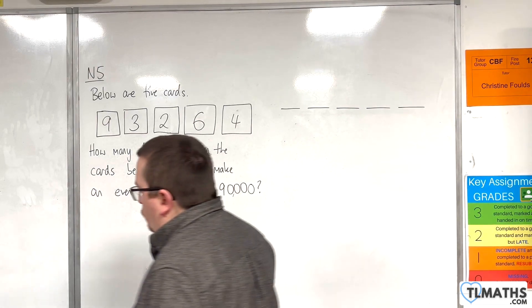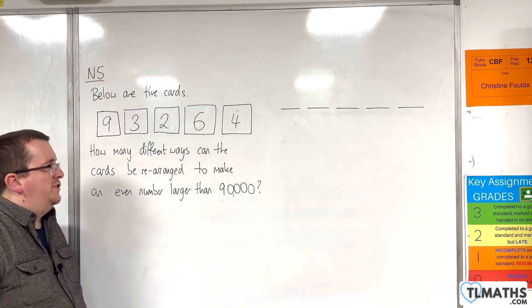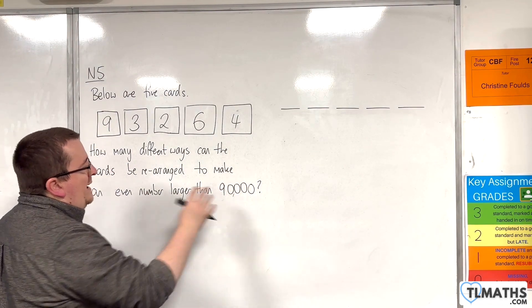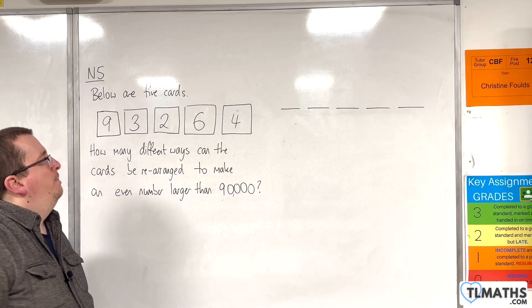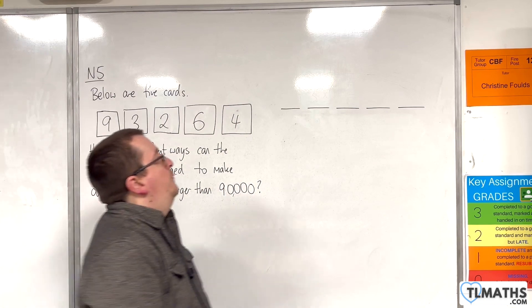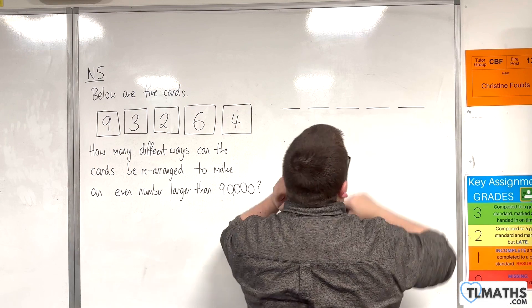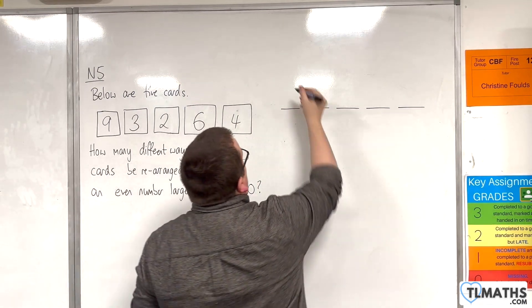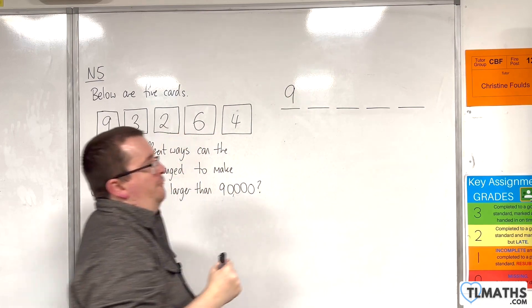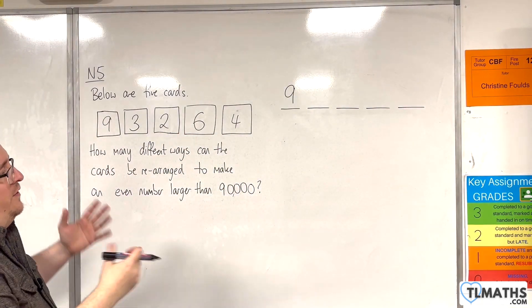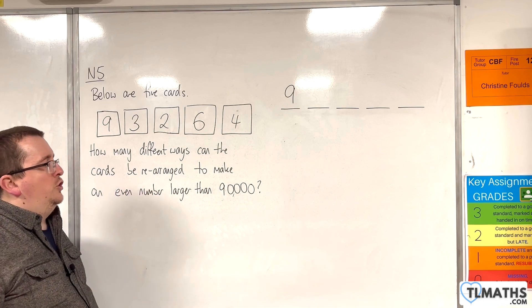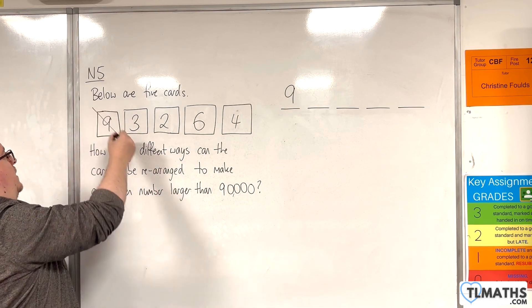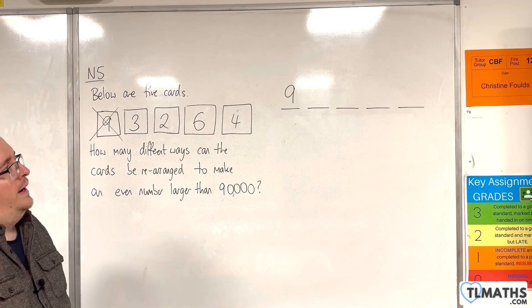Now this one's tricky. We've got a couple of conditions to start off with. First of all, the number has to be larger than 90,000, which means that if we think of these as the five places that my cards can go, the 9 is going to have to go at the front. It has to go at the front. There's nothing else it could be for that number to be larger than 90,000. So that one is done. We can ignore that one.